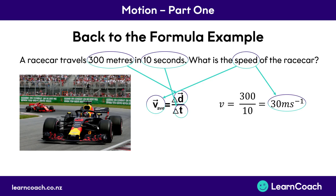So back to our formula example from before, let's fully answer the question. A race car travels 300 meters in 10 seconds — what is its speed? It's the same equation as before, except instead of just 30, we know that the speed is 30 m s to the minus one, or 30 meters per second. So this is why using units and knowing symbols is really important.